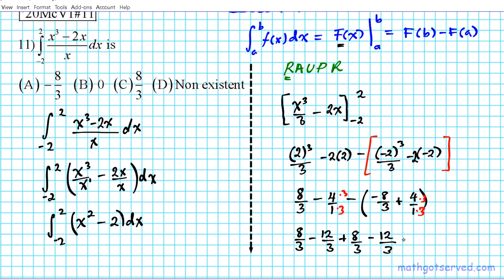So if we go ahead and evaluate this, we're basically going to have 8 plus 8 is 16 minus 24. 16 minus 24 over 3. That would give us negative 8 over 3. And that, ladies and gentlemen, is the answer to question number 11. So answer to question number 11 is option letter A.